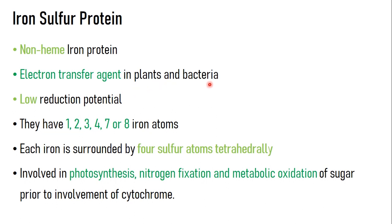One property of iron-sulfur proteins is that they have a low reduction potential. Since they have a low reduction potential, they cannot reduce well, but they can oxidize well — oxidation means loss of electrons. There are many types of iron-sulfur proteins based on the number of iron atoms present: one, two, three, four, seven, or even eight iron atoms. In each structure, the iron is surrounded by four sulfur atoms in a tetrahedral manner — this is common to most types.